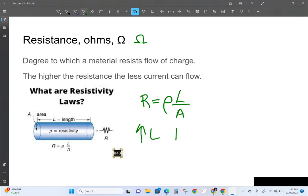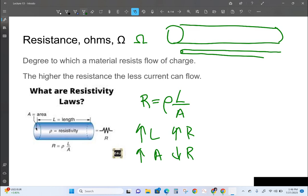So the longer the length, the more resistance. But the bigger the cross-sectional area, the less the resistance. If you have a really long fat wire versus a really long skinny wire, it makes sense that the bigger area is going to have less resistance for that given length. It's almost like a water pipe. It's easier for the electrons to flow through because there's more area for them to flow through.